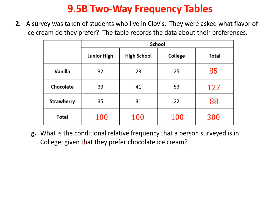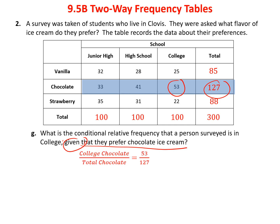Finally, given that they prefer chocolate: 53 out of 127 were in college. So the conditional relative frequency is 53 over 127, or 42%. If you meet somebody in the survey who prefers chocolate, there's a 42% chance they were in college. These examples show the different ways you can look at the data — comparing by school level or by the flavor they prefer.